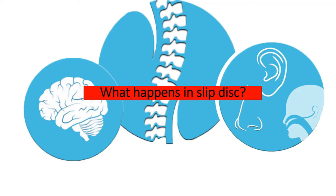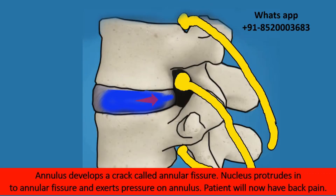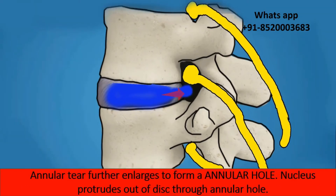So what happens in a slipped disc? The annulus develops a crack called an annular fissure, and the nucleus protrudes into the annular fissure and exerts pressure on it. Because of this crack, the patient will have back pain. The annular fissure further enlarges to form an annular hole, and the nucleus protrudes out of the annular hole.